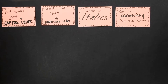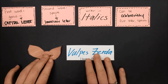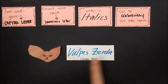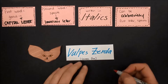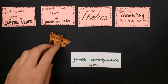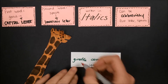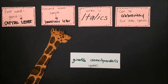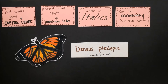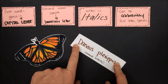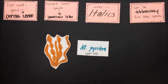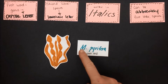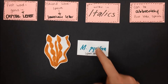Let's check and see if some of these names are written correctly. Here's the scientific name for a fennec fox — it is italicized and the genus is capitalized, but the species is also capitalized, so this is incorrect. Here's the scientific name for a giraffe — it is italicized, but we would need to capitalize that genus name to make it formatted correctly. The monarch butterfly's name should be italicized to be correctly formatted. And this last one is formatted correctly: it's italicized, with a capital letter for the genus and lowercase for the species.